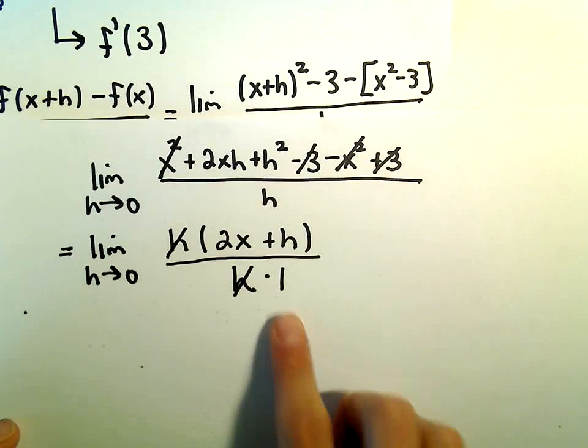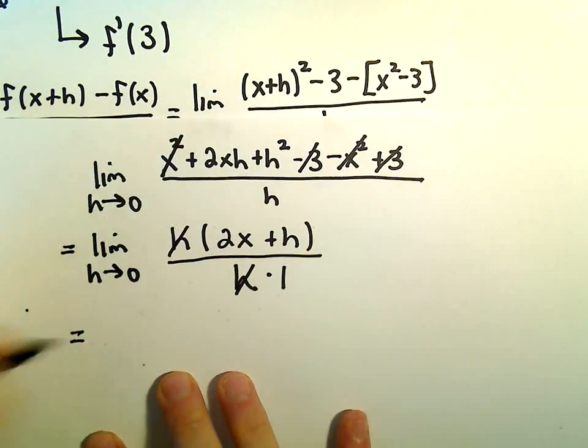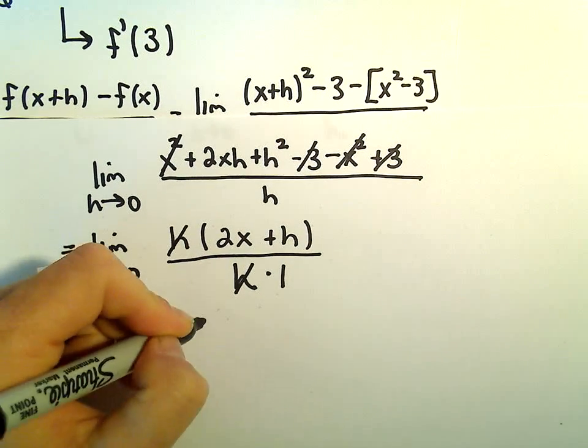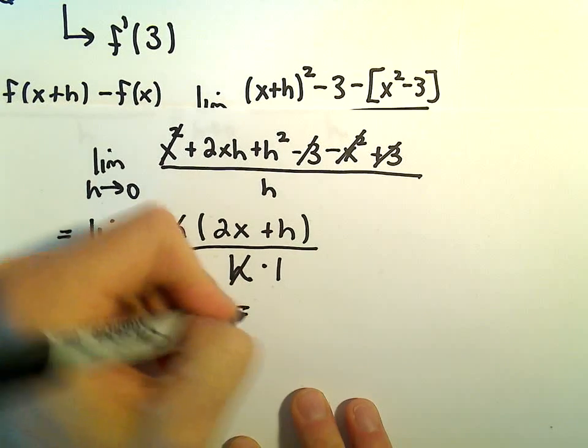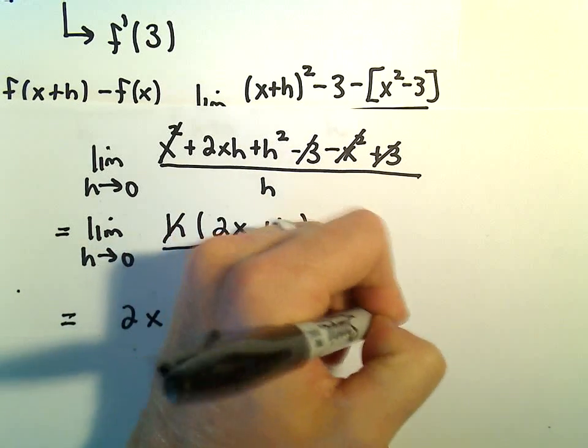You can think about there as being a times 1 in the denominator. And now if we plug in h equals 0, when we plug in h equals 0, we're just left with 2x plus 0, or we're left with 2x. So that's going to be a nice little formula for our derivative.